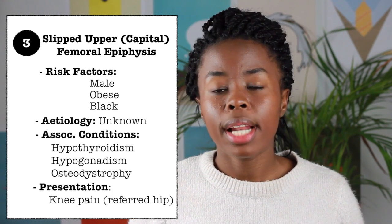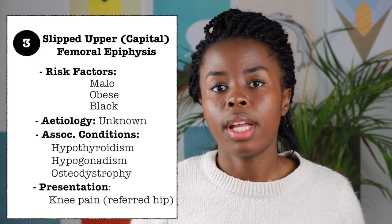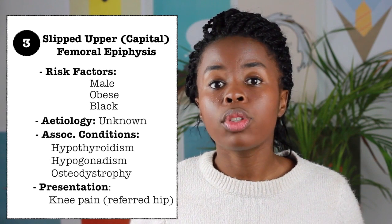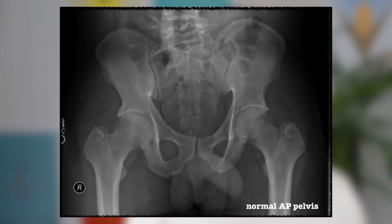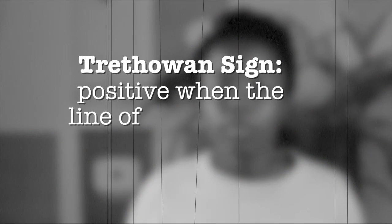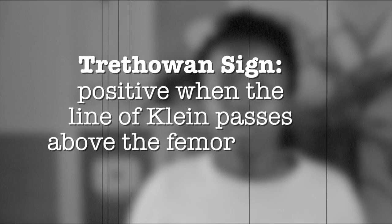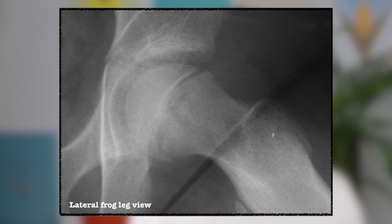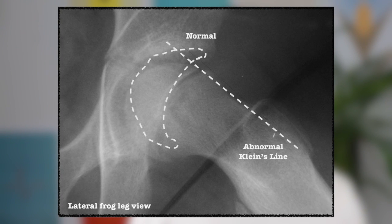Patients can be classified as stable or unstable based on their ability to bear weight and ambulate. When viewing the AP x-ray, you may find a positive Trethowan sign. A lateral frog-leg view is much better in detecting subtle slips. On the lateral frog-leg view, you will find that Klein's line does not intersect the femoral head.